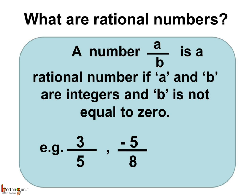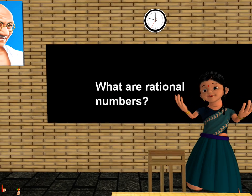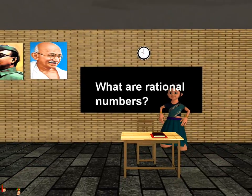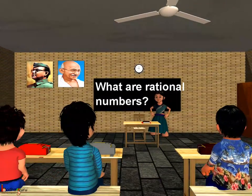Thus, 3 by 5 or minus 5 by 8 are the examples of rational numbers. So, now we know what are rational numbers. That's all for now. Bye-bye, children.